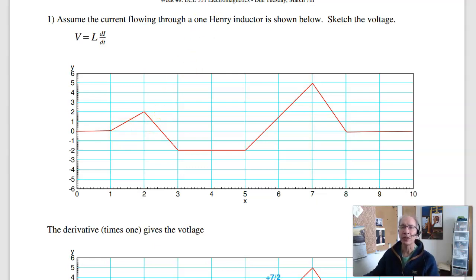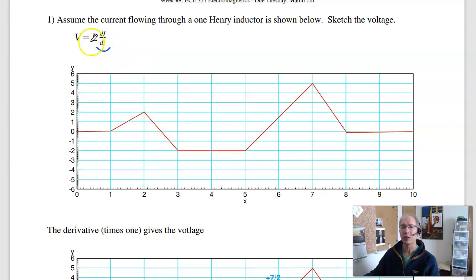Capacitors are integrators, inductors are differentiators. The voltage is the derivative of the current times L. So if L is one, it's just the derivative. Initially, the slope is zero, the voltage will be zero. Now the slope changes by 2 amps in one second, so it jumps to plus 2.